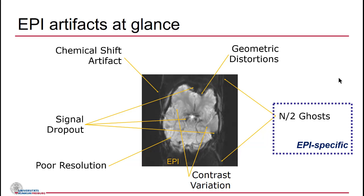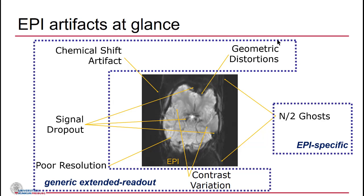Out of all these artifacts, only the N/2 ghost artifacts are really specific to EPI. Almost all other artifacts can be noted from different sequences, such as T2-star-weighted sequences or generic sequences which require longer time to sample k-space — so-called extended readout sequences.